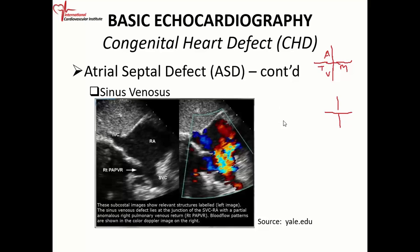So try to get as much information and go over the information on atrial septal defect, because you're going to see a lot of those cases. Remember: if an atrial septal defect is clinically significant, you're going to get right-sided dilatation — dilated right atrium, dilated right ventricle — not left-sided dilatation. You'll get increased pulmonary blood flow and as a result, elevated pulmonary pressures. The patient can become symptomatic.